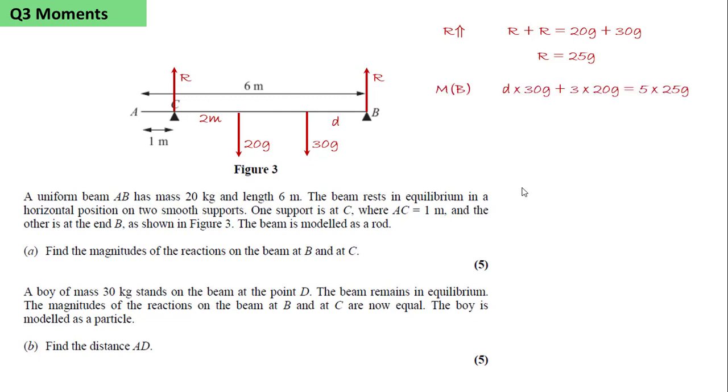Now we take moments about B. And we get d times the weight of the buoy, 30g, plus 3 times 20g, the weight of the beam. And that will equal the clockwise moment, 5 times the reaction, which is 25g. From this we calculate 30d is 65, and d is 13 over 6.